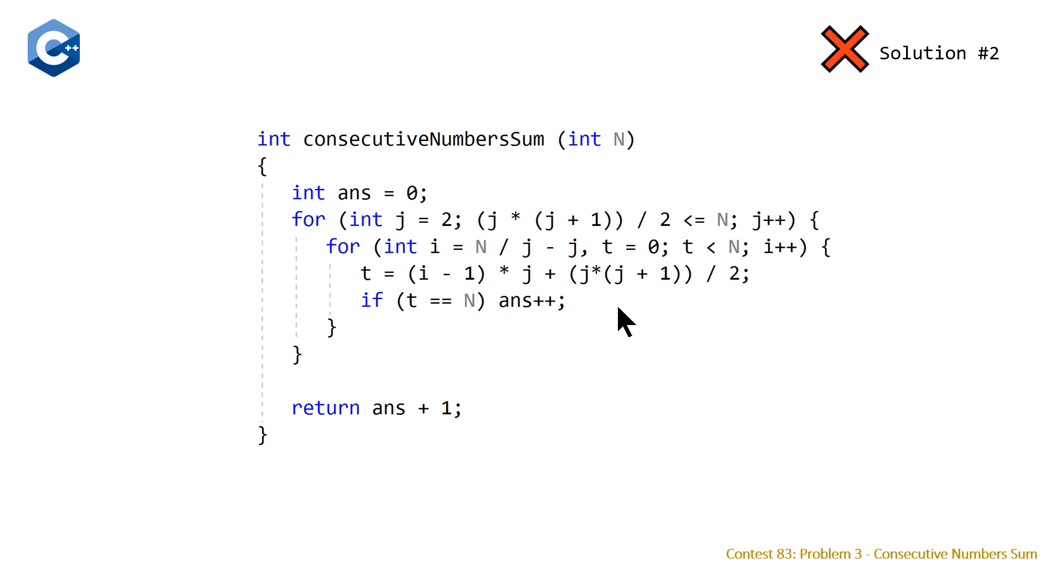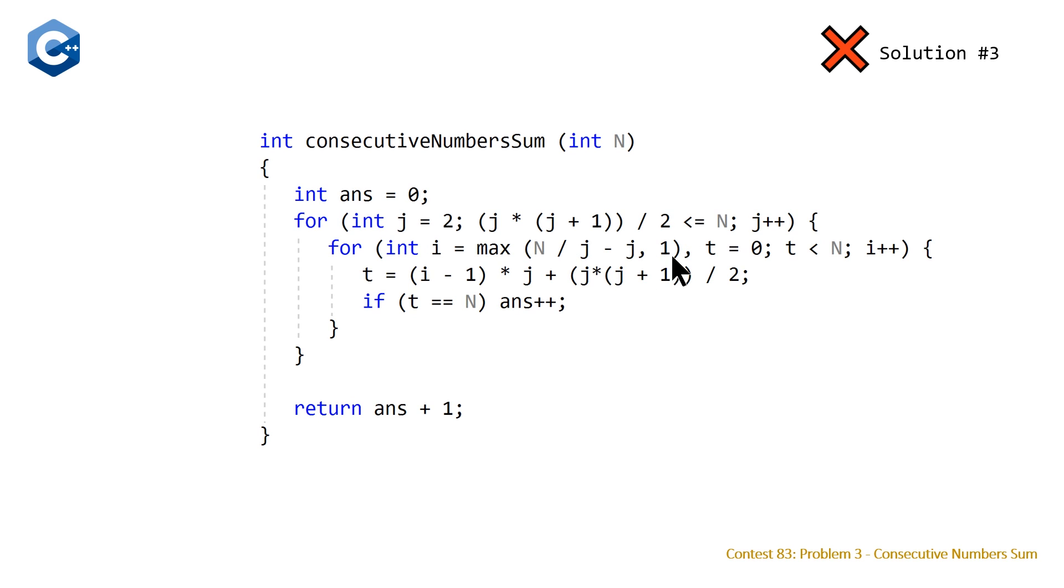The second improvement I made was noticing that for large values of J you can end up with a negative initial value for I. So all you have to do is add a floor of 1 to our initial value for I, and this will improve your algorithm as well.